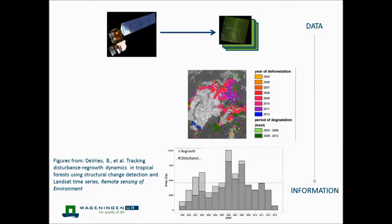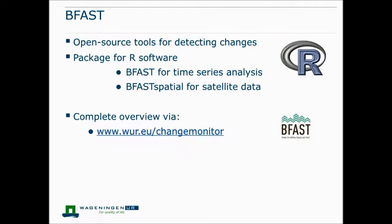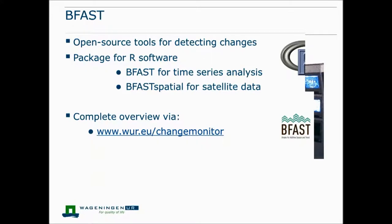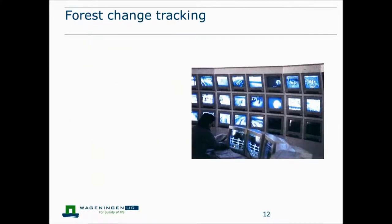We analyze all those images to extract the year and period of deforestation and degradation, so that we know the timing of disturbances and forest changes and also the extent. We go from satellite data to useful information like the area of forest change over time. This bar plot shows forest disturbances in dark grey and regrowth in light grey. BFAST is a toolkit for break detection — it all started with the BFAST package, which is a generic open source toolkit for time series analysis detecting changes in any kind of time series, not only from satellite data but also temperature or rainfall data.